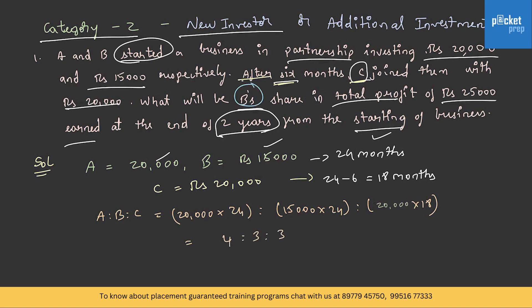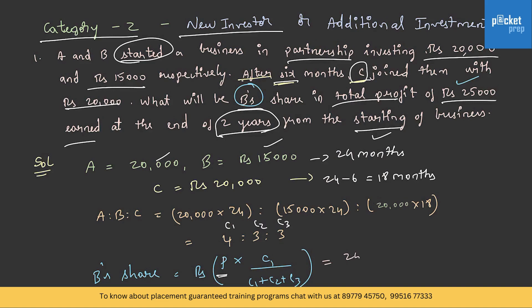We need to find B's share. B's share = profit × C2/(C1+C2+C3) = 25,000 × 3/10 = Rs. 7,500. So B's share is Rs. 7,500.